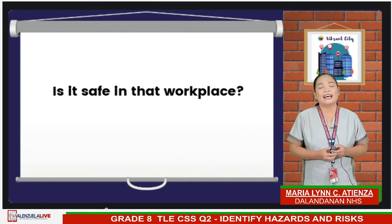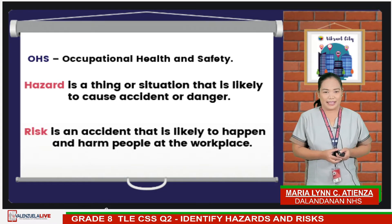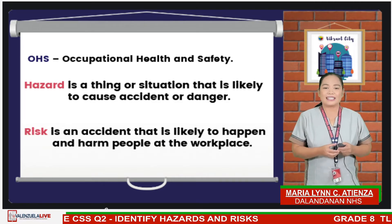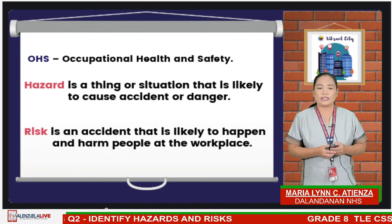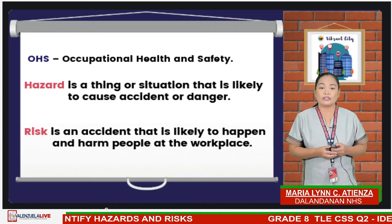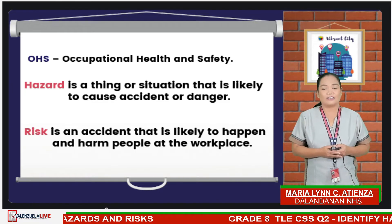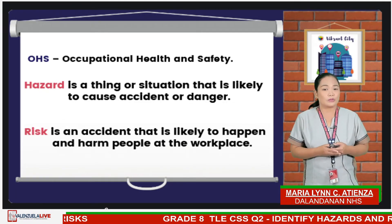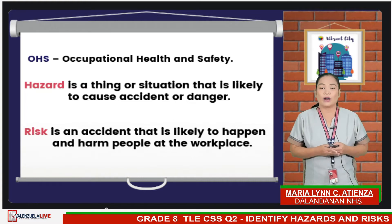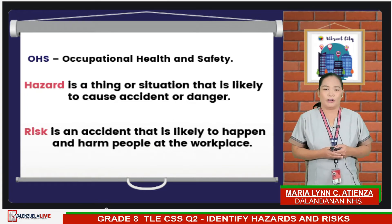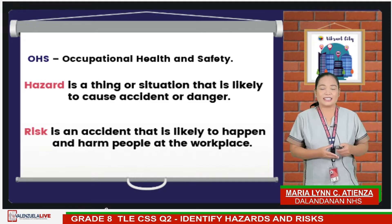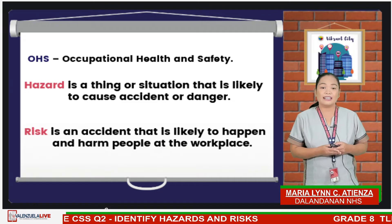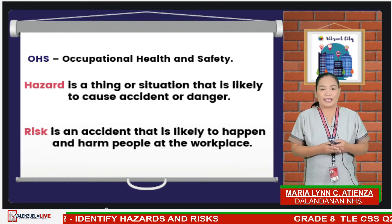Occupational Health and Safety, or OHS, is a planned system of working to prevent illness and injuries where you work by recognizing and identifying hazards and risks. A hazard refers to a situation that has the potential to harm the health and safety of people. Risk is the chance or probability that a person will be harmed or experience an adverse health effect if exposed to a hazard.